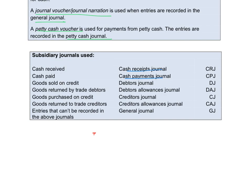When goods are sold on credit, it will be recorded in the debtors journal. When debtors return goods, it will be recorded in the debtors allowances journal. When you purchase goods on credit, you will record it in the creditors journal. And if any entry doesn't fit into one of these journals, the entries will be recorded in the general journal.